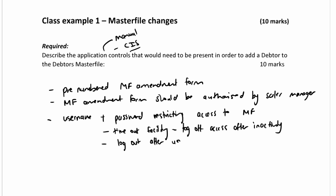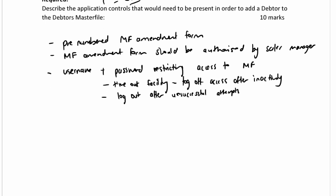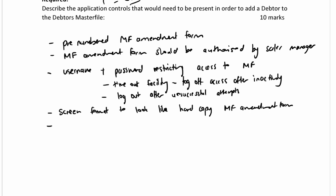There should also be a lockout or shutdown after unsuccessful login attempts, because that could be somebody trying to hack. Once the right person gains access, you need to make sure that the data entered is correct — so screen aids and program checks will ensure that. The screen must be formatted to look like the hardcopy master file amendment form.